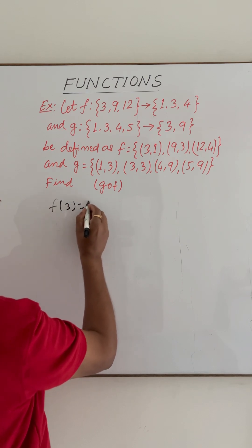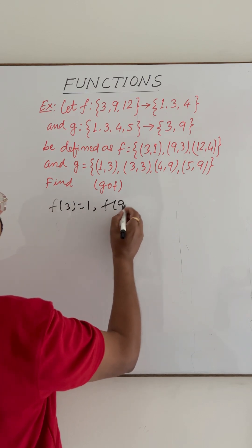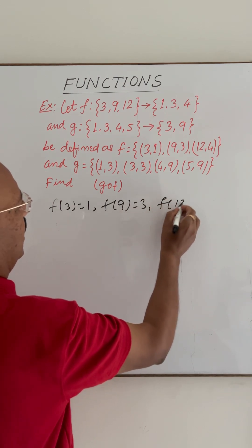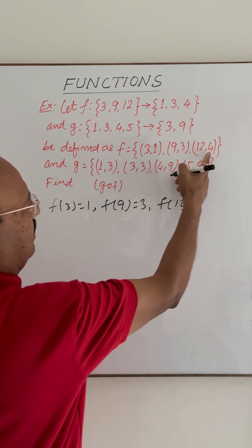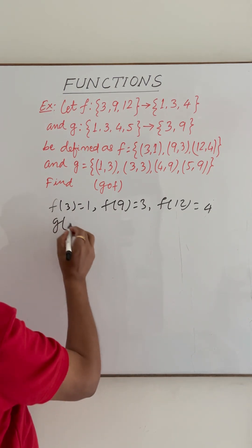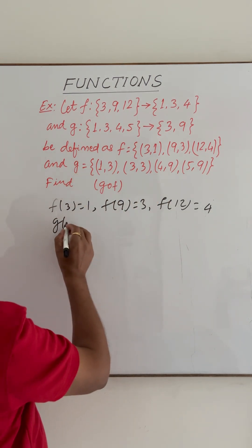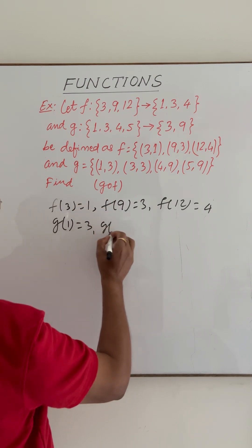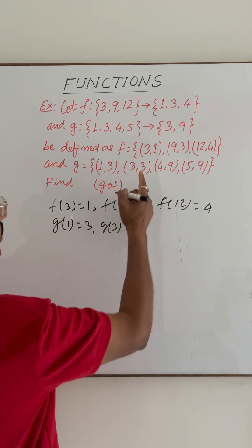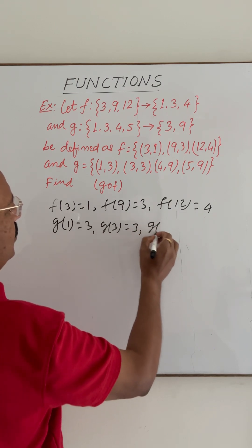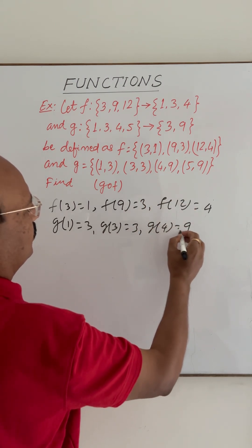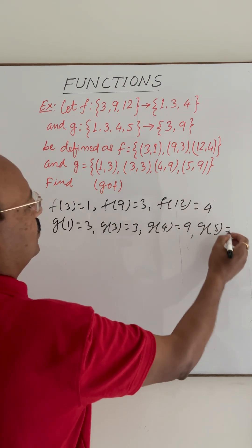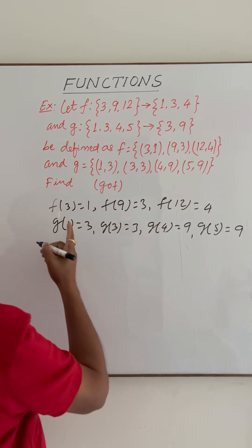With the help of the given definition of f, we can write: f(3) = 1, f(9) = 3, and f(12) = 4. Function g gives us: g(1) = 3, g(3) = 3, g(4) = 9, and g(5) = 9.